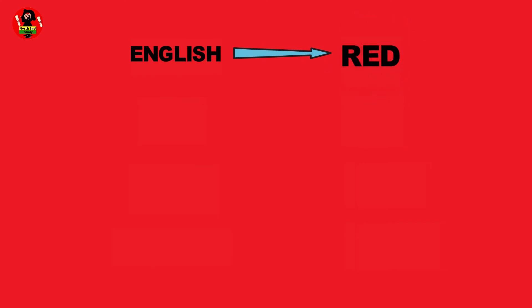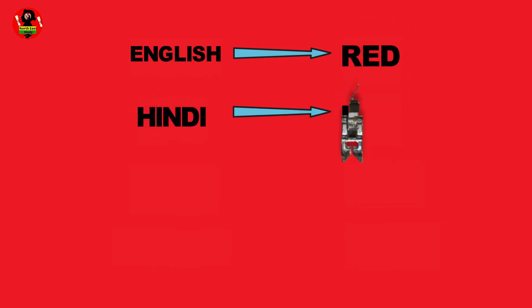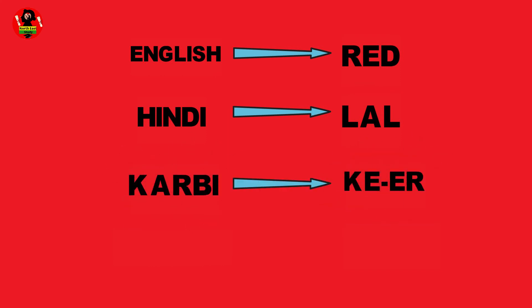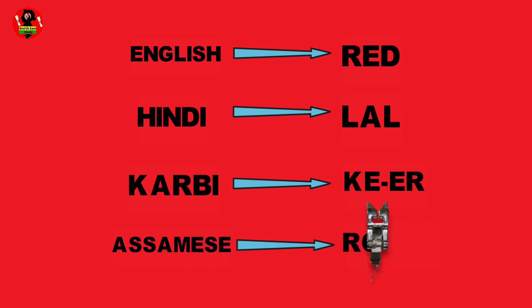English: Red. Hindi: Lul. Karbi: Kier. Assamese: Rungah.